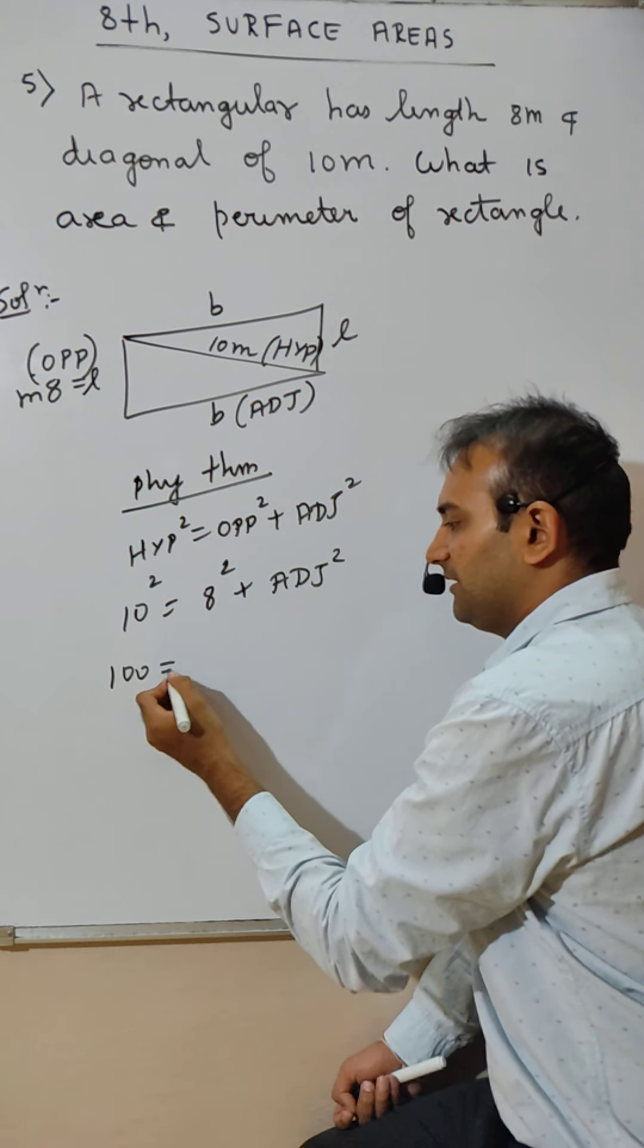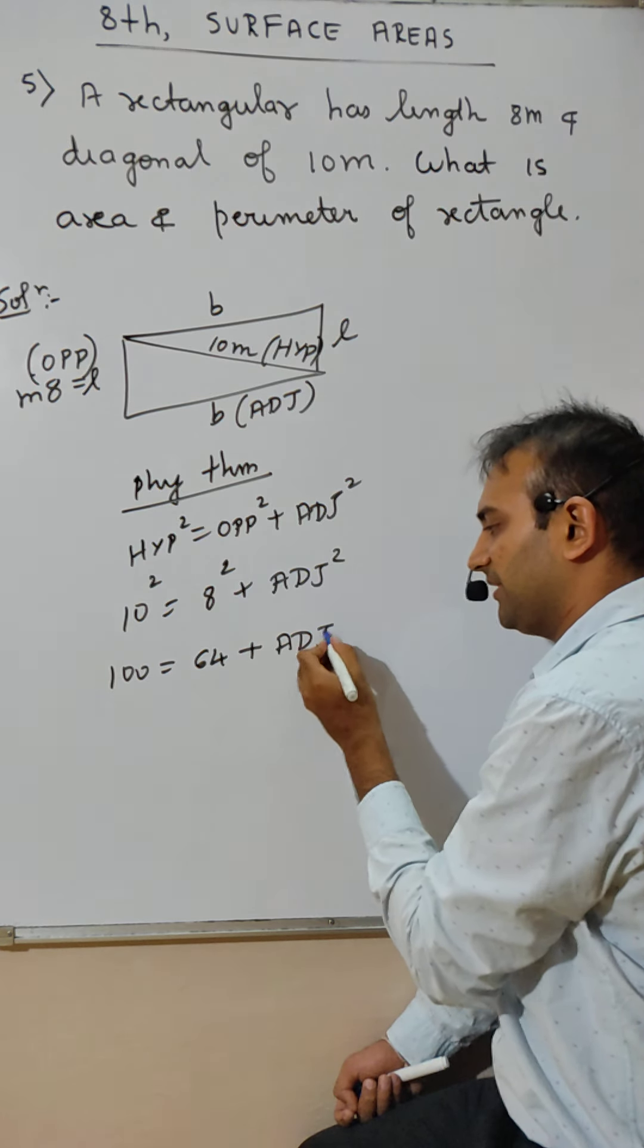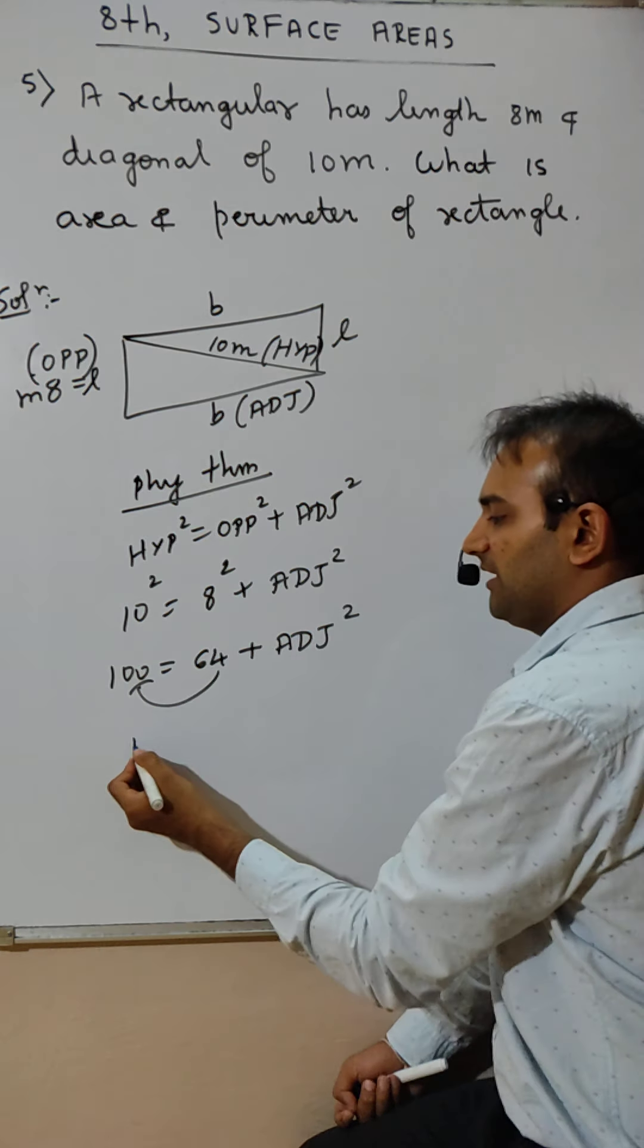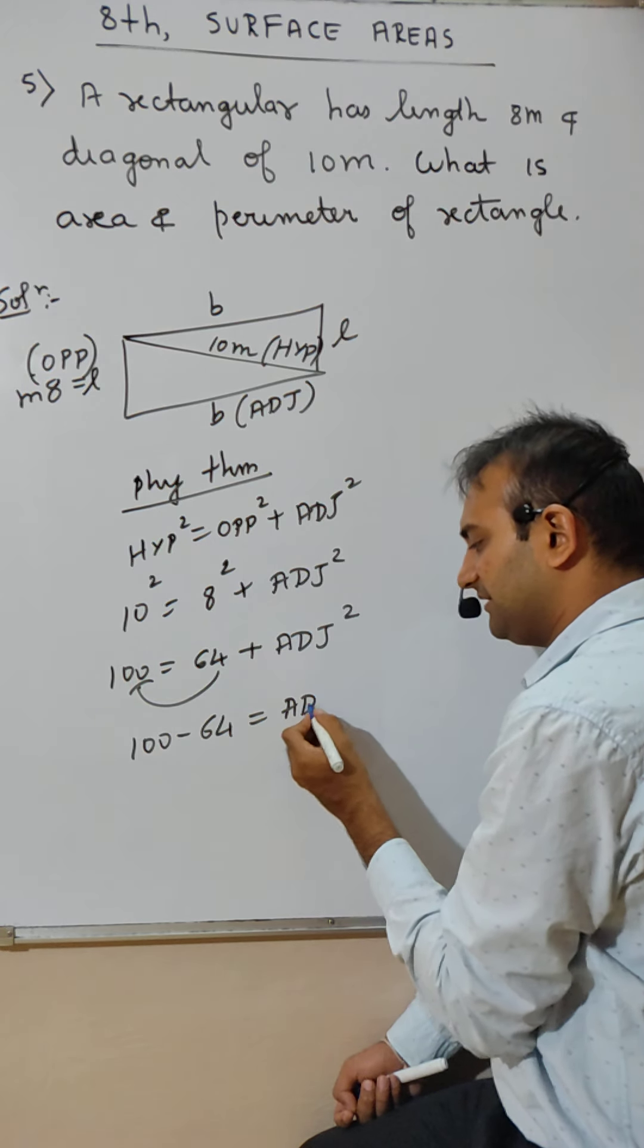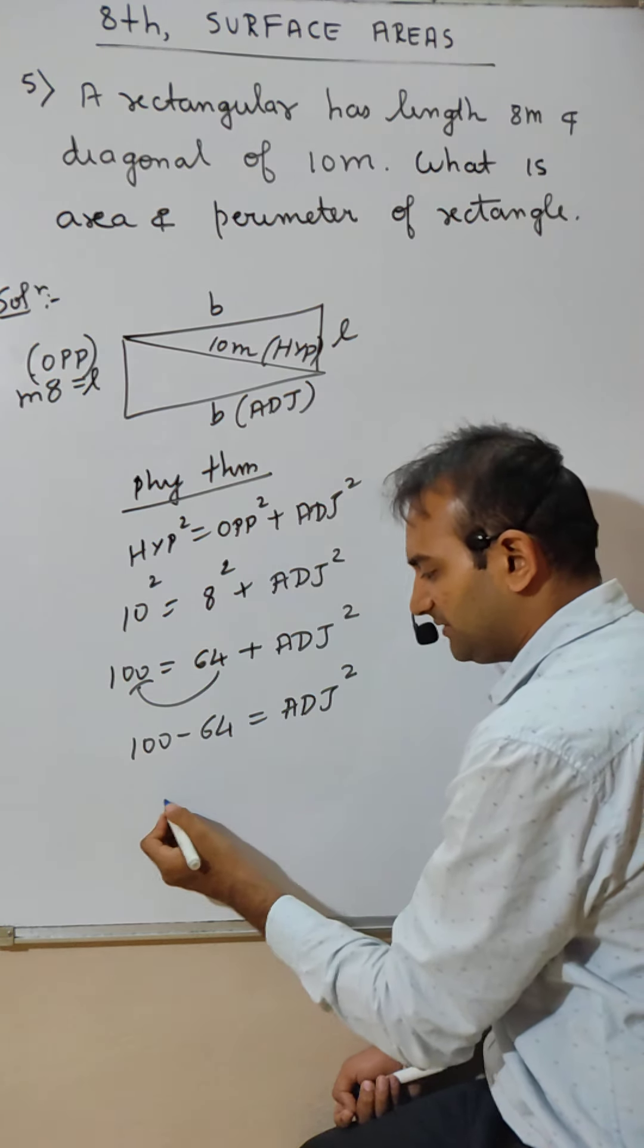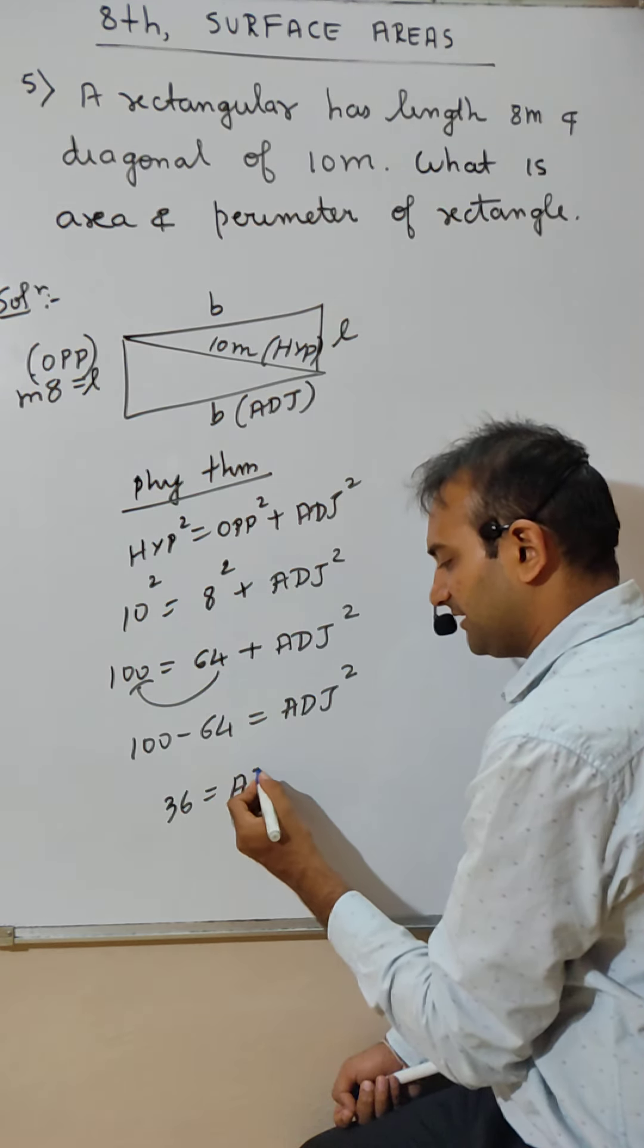100. 8 ka square is 64 plus adjacent ka square. Yeh idar gaya. Hundred main se 64 gaya. Adjacent ka square. Yaani kya? 36 is adjacent ka square.